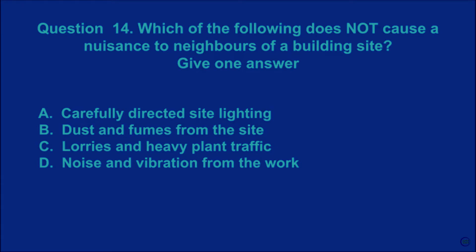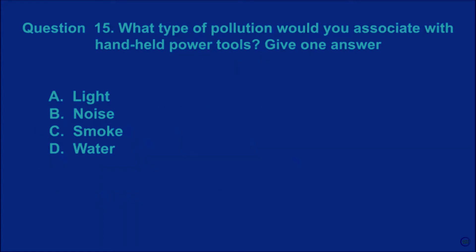Question 14: Which of the following does not cause a nuisance to neighbours of a building site? Give one answer. A: carefully directed site lighting. B: dust and fumes from the site. C: lorry noise and heavy plant traffic. D: noise and vibration from the work. The correct answer is A.